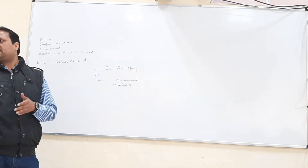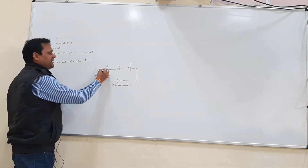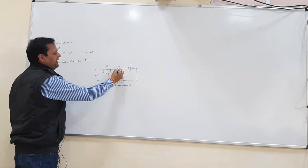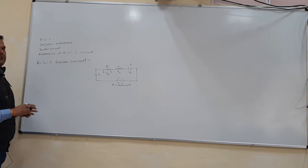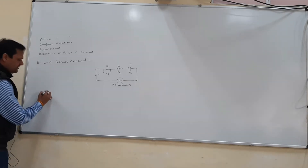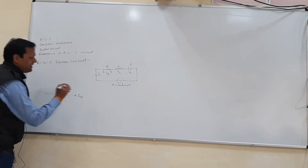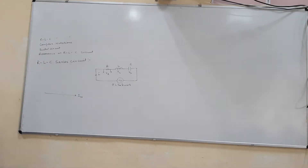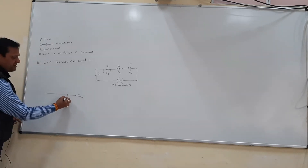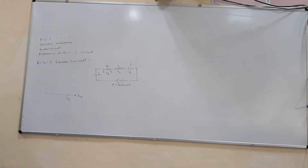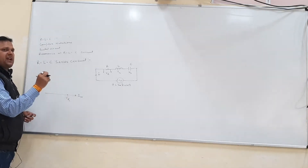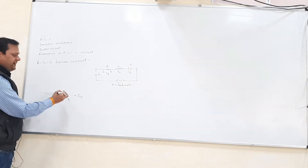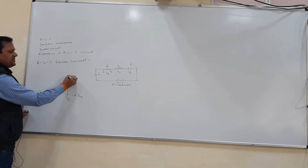We will proceed similarly as we did in the RL series and RC series cases. We will consider the voltages as Vr, Vl, and Vc. We will draw the phasor diagram with current as a reference, so the horizontal line represents Im. The phasor of Vr will be on the same horizontal line because voltage and current are in the same phase. For Vl, current would be lagging, so voltage would be leading current — this is your Vl.